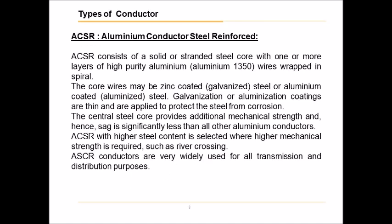ACSR — aluminium conductor steel reinforced. ACSR consists of a solid or stranded steel core with one or more layers of high-purity aluminium wires wrapped in spiral. The core wires may be zinc-coated steel or aluminium-coated steel. Galvanization or aluminization coatings are thin and are applied to protect the steel from corrosion. The central steel core provides additional mechanical strength, and hence sag is significantly less than all other aluminium conductors.